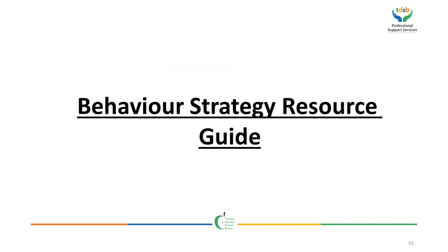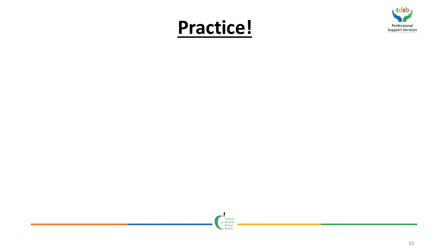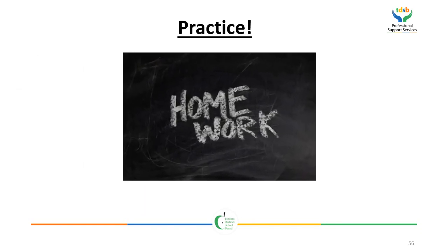The Behavior Strategy Resource Guide will be provided to you during this presentation. Using the worksheet you completed in Part 1, identify the skills that the student you chose demonstrates — whether often, sometimes, or rarely. Then pull out the handout entitled Behavior Strategy Resource Guide, where skills are broadly grouped together and linked to different strategies you may wish to try. The hyperlinks will lead you to videos and online resources to explain the strategy further. Select one or two strategies to try, and after trying them out, record your observations in the outcomes column.